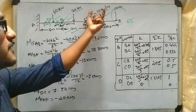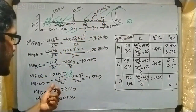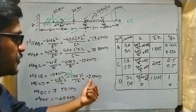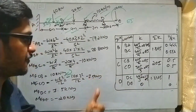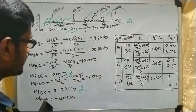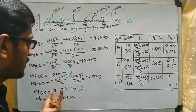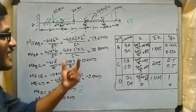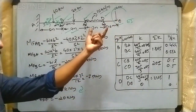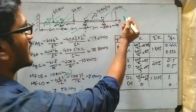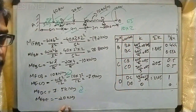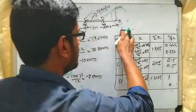For the CD span, a UDL of 10 kN/m is acting, so using M_CD = -WL²/12, substituting gives -7.5 kN·m, and M_DC = +7.5 kN·m. For the DE portion, it is treated as a cantilever: M_D = 10 × 2 = -20 kN·m.